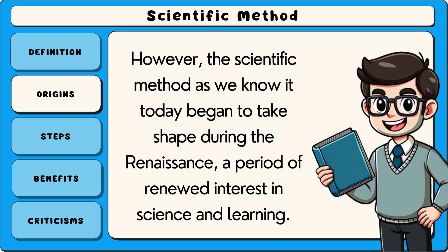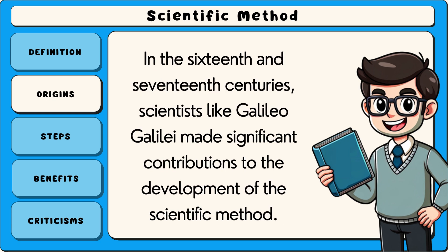However, the scientific method as we know it today began to take shape during the Renaissance, a period of renewed interest in science and learning. In the 16th and 17th centuries, scientists like Galileo Galilei made significant contributions to the development of the scientific method.